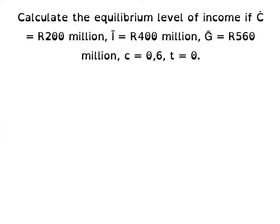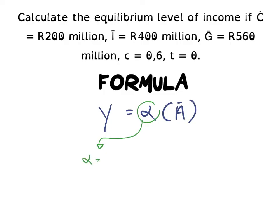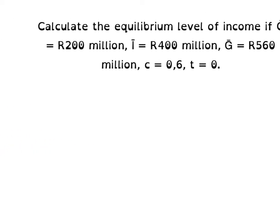Similar to what we did in our first example, we will first state our formula: Y equal to alpha times autonomous A. Our alpha, the multiplier, is equal to 1 divided by 1 minus c. Our autonomous spending A-cap, on the other hand, would be C-cap plus I-cap plus G-cap. We are going to use the exact same three-step method.